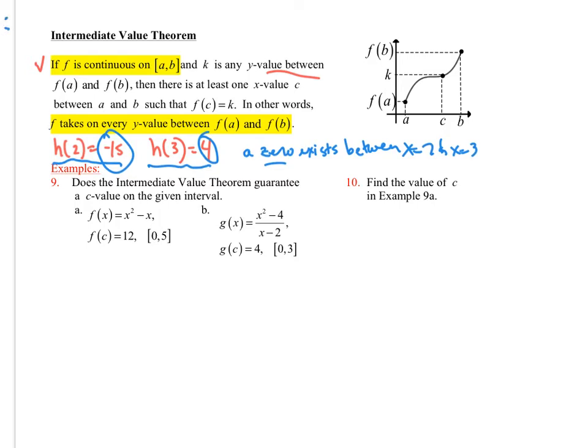The other question is, could I have many, many c values that take on this k value? Yes, you could have something that oscillates quite a bit if you wanted. It could take it on many times. But as long as you have a continuous function, it guarantees at least one. This is an existence theorem, so it just guarantees us at least one.